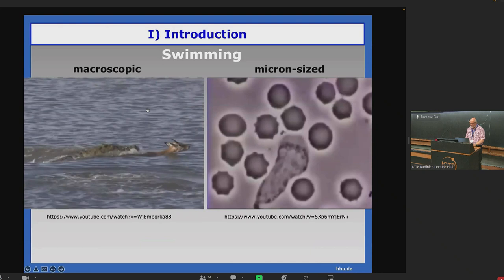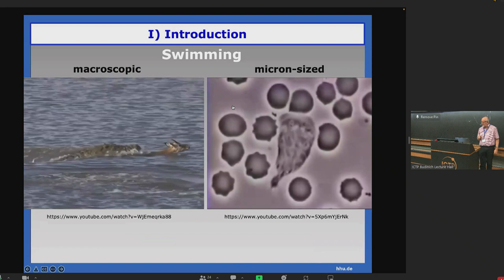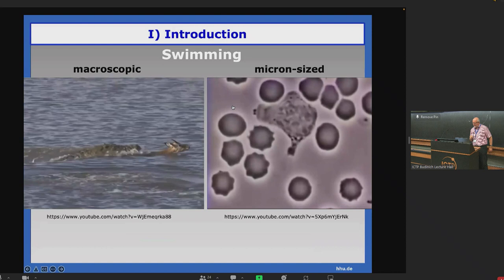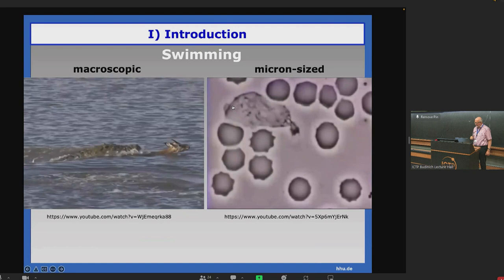So this happens also in the micro world. This is a micron-sized white blood cell following the bacterium, which you see, and it now swells it. That's the end of it.